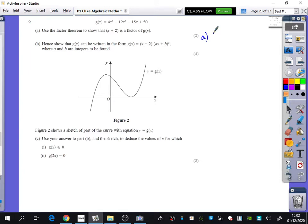So you substitute, notice this one is g of x, so you should have done g of minus 2. So you should say 4 times minus 2 cubed minus 12 times minus 2 squared minus 15 times minus 2 plus 50. All of that is equal to 0, so you need to say, hence x plus 2 is a factor.